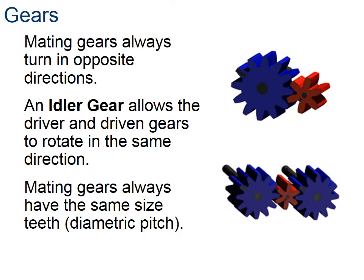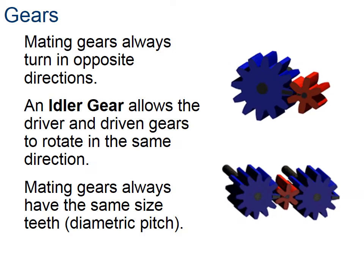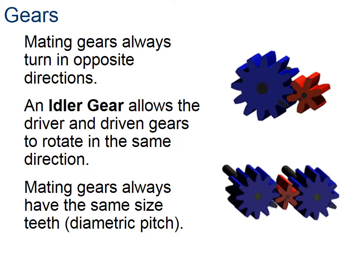When you have three gears, which you see on the bottom—the two blue and the red—the middle gear is called an idler gear. And really its only function is to change the direction of the output gear, so that it's turning in the exact same direction as the input or the driver gear.